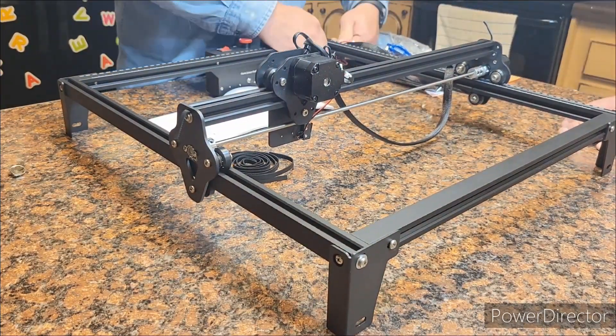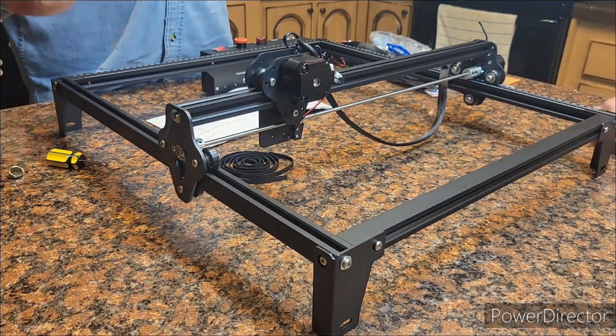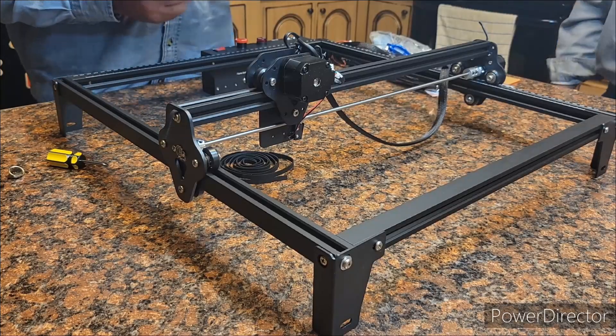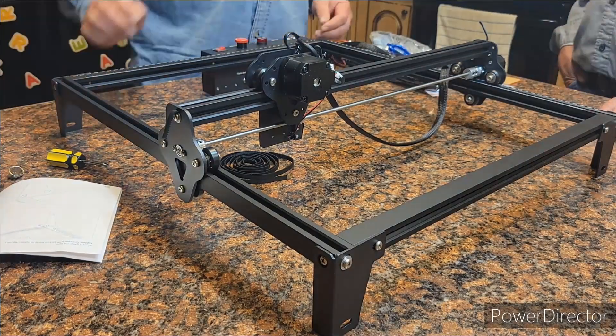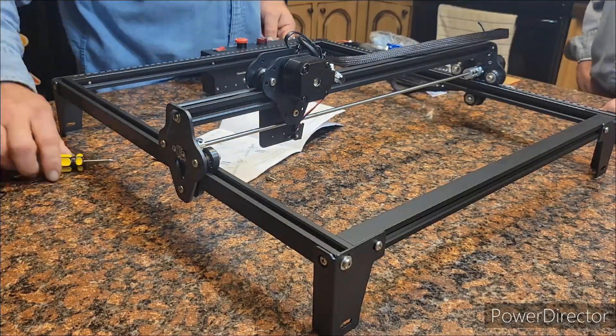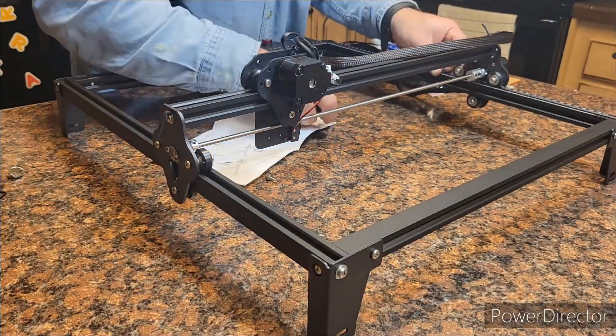Also, when you put this front control panel on, be aware of the wire because I just kind of stuck it up here, screwed it on. And then when we were running the machine, I kept noticing the wire was trying to get in between the gantry there. I took the panel back off and untwisted it so that that wire was nice and straight and then it ran very smooth.